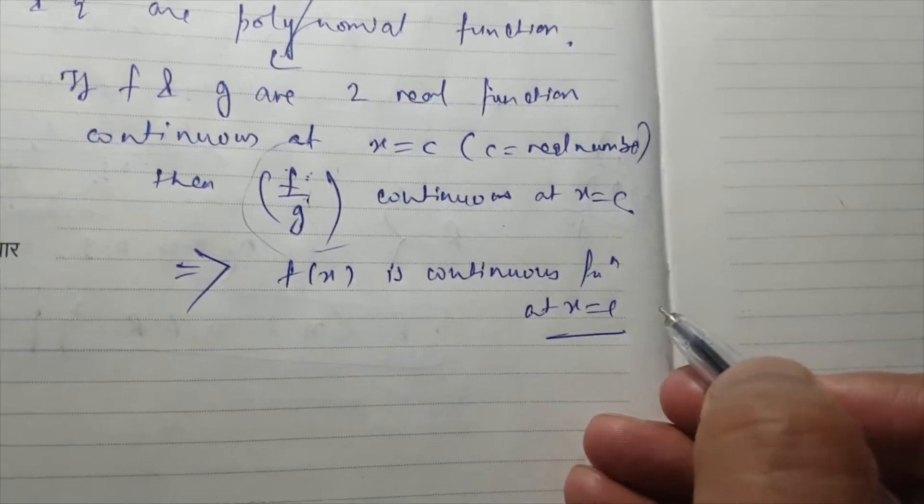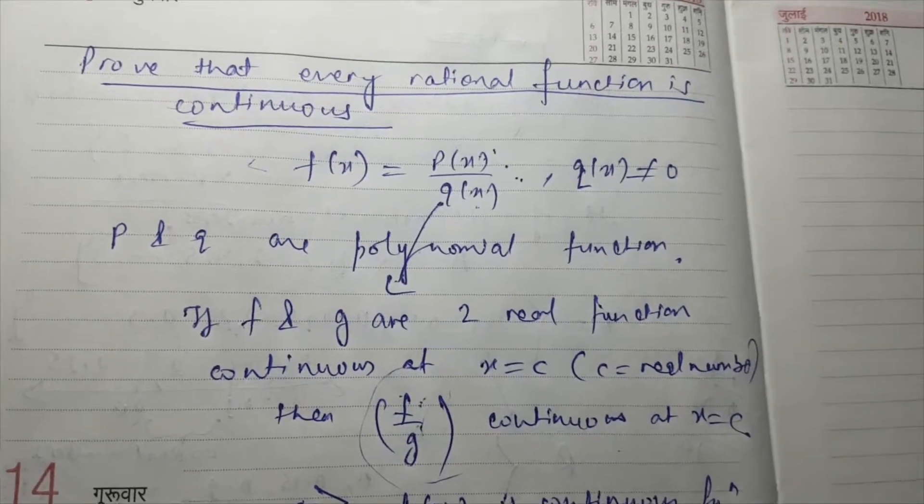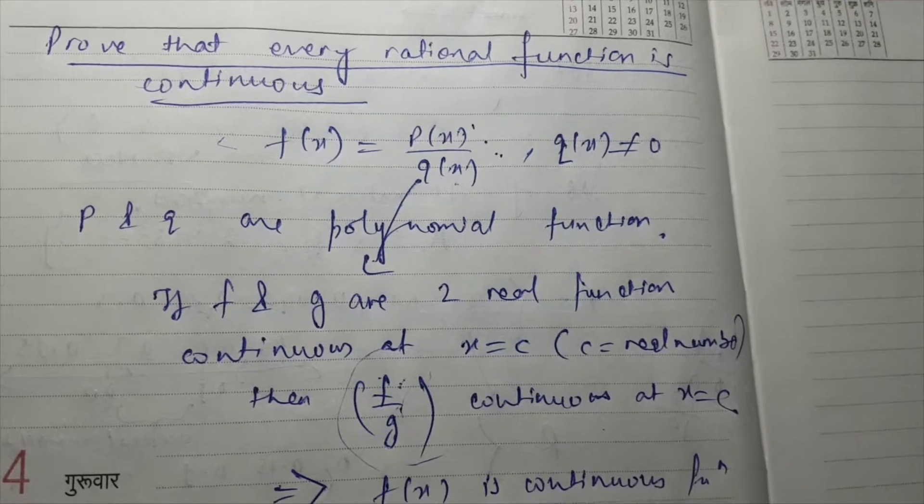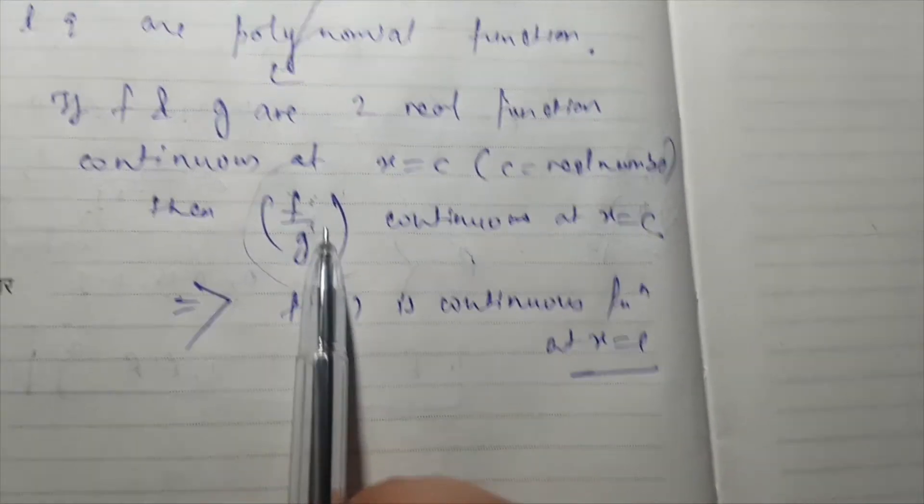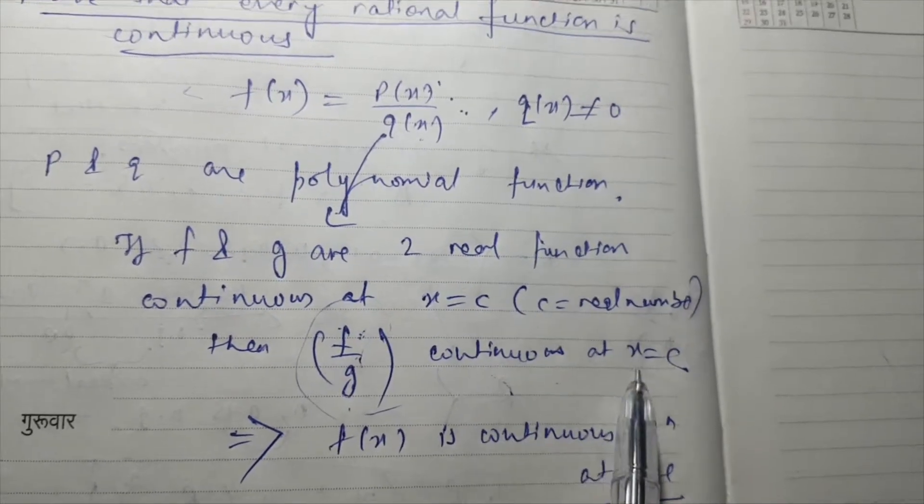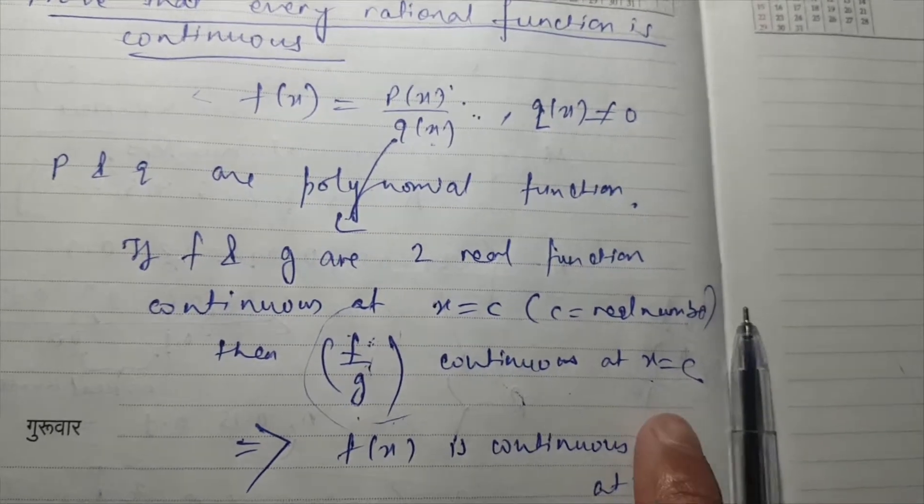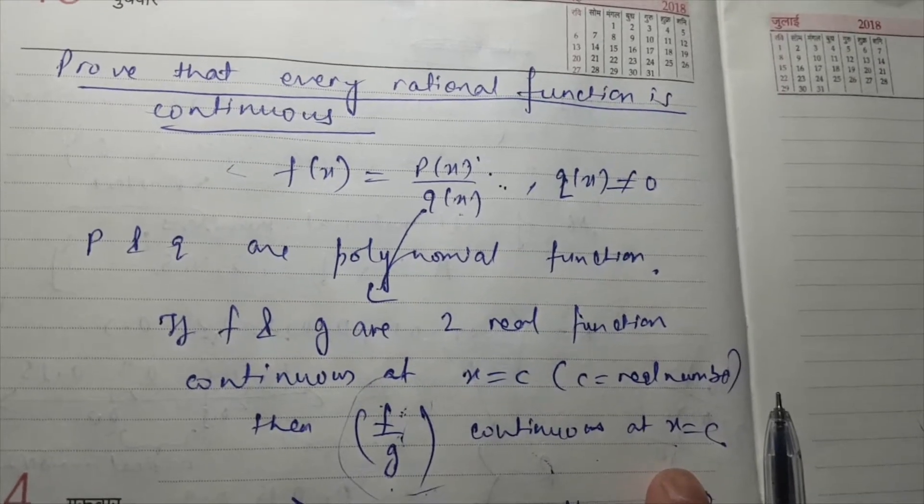You can see any random real number on the number line, so we have proved it by using the continuity of polynomial functions and the theorem that one function divided by a second function is also continuous if both separate functions are continuous at some point, like the point I mentioned here is c. I hope you got it, friends.